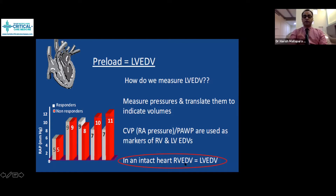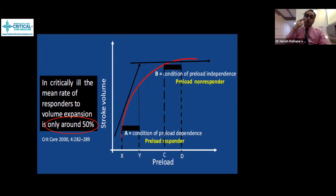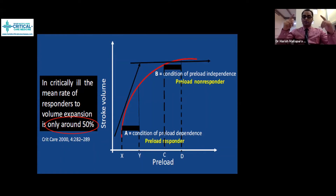In an intact heart only, left ventricular end-diastolic volume will equal right ventricular end-diastolic volume. Otherwise, whenever there is pathology between these assumptions, it is not going to be valid. Previously, we thought that when a patient has low CVP and you give volume, they would always increase cardiac output — meaning they are preload responders. But in critically ill patients, only about 50% respond to volume expansion; only 50% are able to increase stroke volume in response to the given preload.